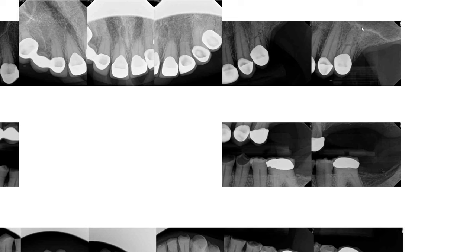Also recognize that the sinus floor has come down significantly, or that the ridge has lost significantly, so that the crest is now consistent with the floor of the maxillary sinus. If you were ever to place an implant in this area, you'd need some type of sinus lift procedure to increase the height of the ridge.